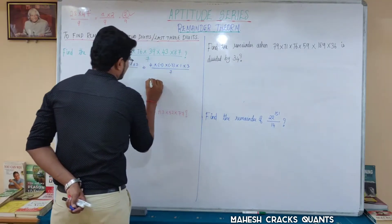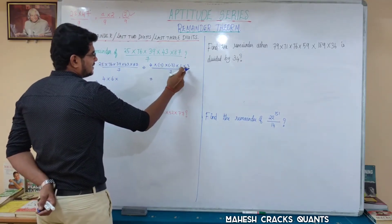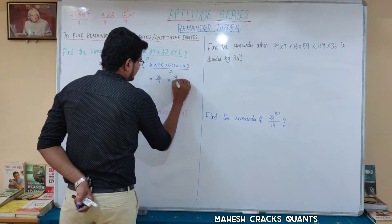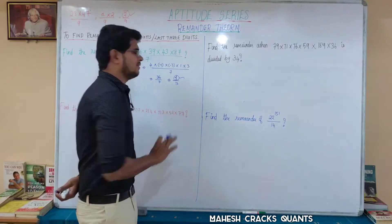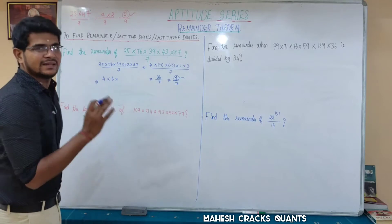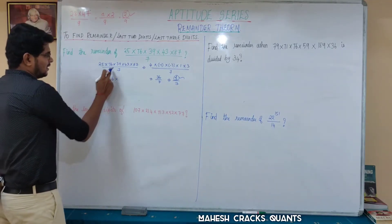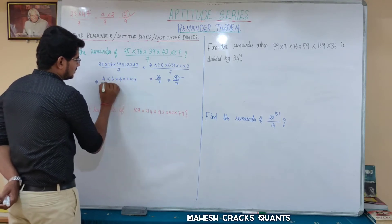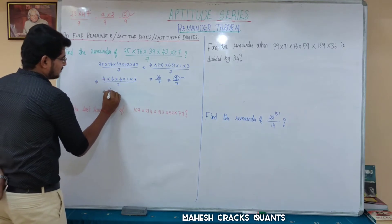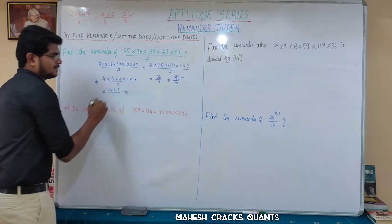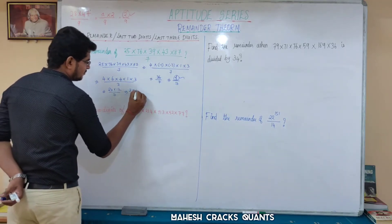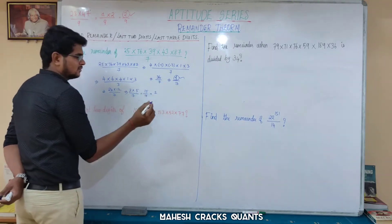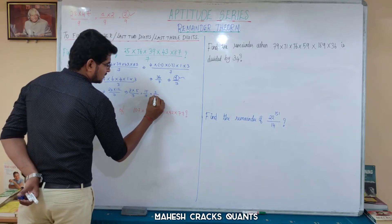So we multiply: minus 1 and minus 3 give plus, 3 into 3 is 9, 9 into 4 is 36. 36 divided by 7 — remainder is 1. Then solving positively: 4 into 6 is 24, 24 divided by 7 remainder 3. 4 into 3 is 12, 12 divided by 7 remainder 5. 3 into 5 is 15, 15 divided by 7 remainder 1. So remainder is 1.